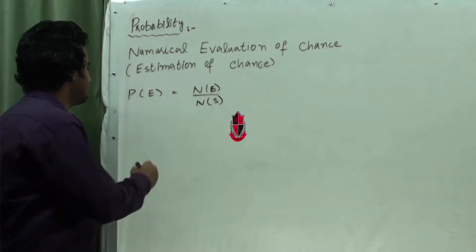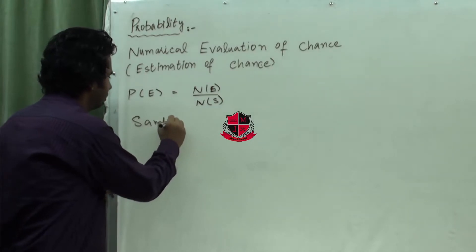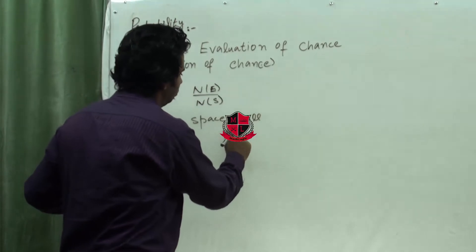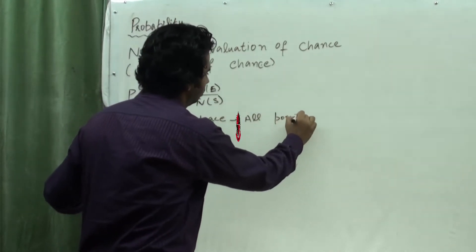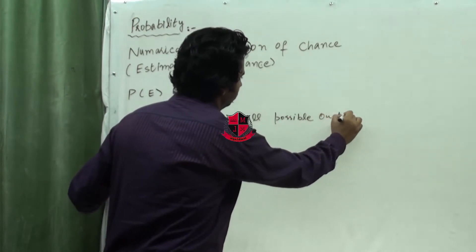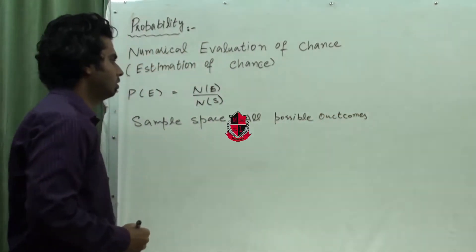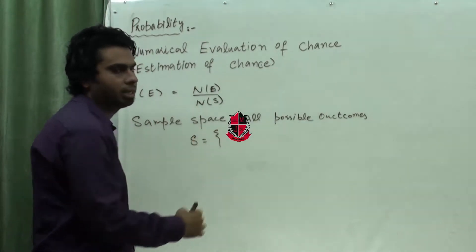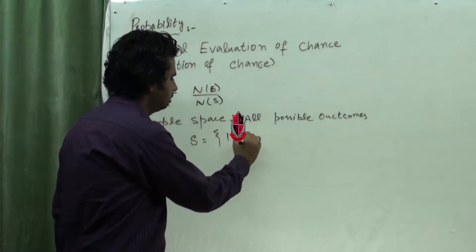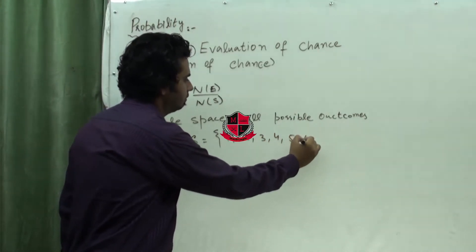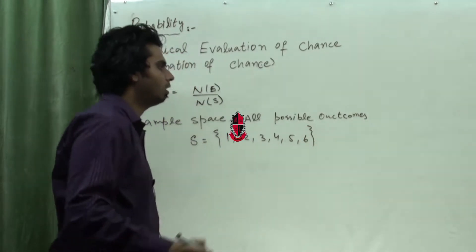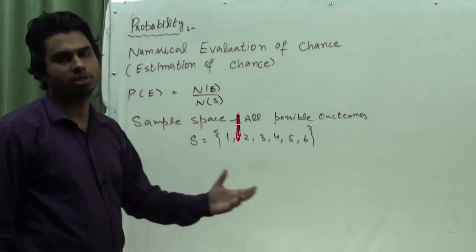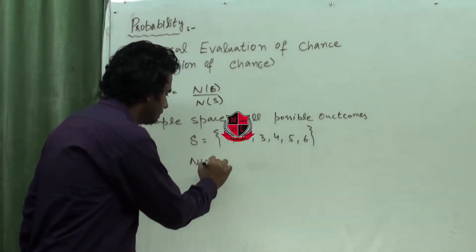Now I will tell you what sample space is. Sample space means all possible outcomes. For example, we have a dice. Let's say set S. We know that in a dice the possible outcomes are 1, 2, 3, 4, 5, 6. So all the possible outcomes when we roll a die are 1, 2, 3, 4, 5, 6, and the number of elements in this set is 6.